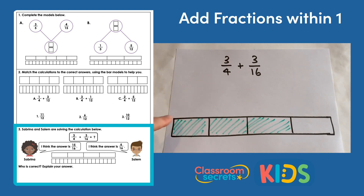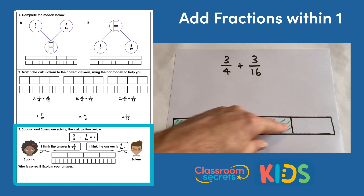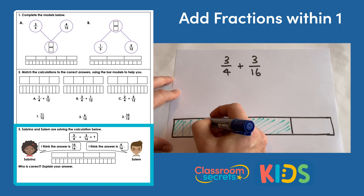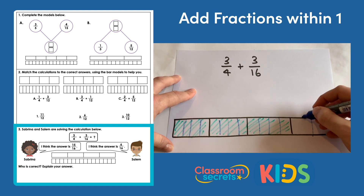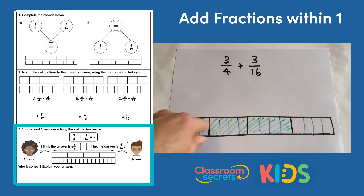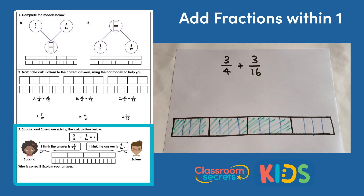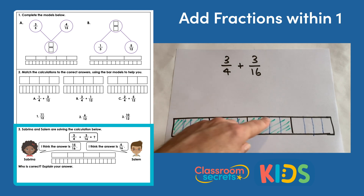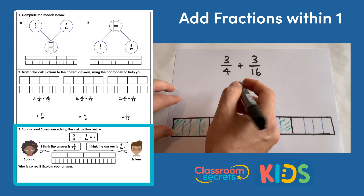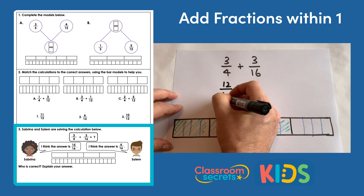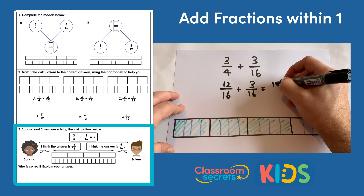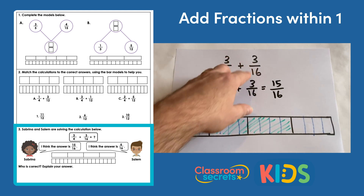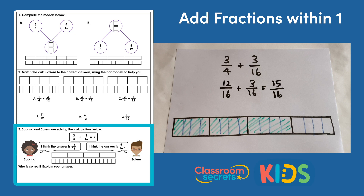We need to convert quarters to sixteenths, so we're going to split each of these quarters into four equal parts because we need to multiply four by four to make sixteen. So each quarter is split into four equal parts, giving us sixteenths — sixteen parts. The three quarters we were looking at are now twelve of the sixteen parts, so three quarters is equivalent to twelve sixteenths. Twelve sixteenths add three sixteenths means we have fifteen sixteenths. So three quarters add three sixteenths is fifteen sixteenths — it was Sabrina who was correct.